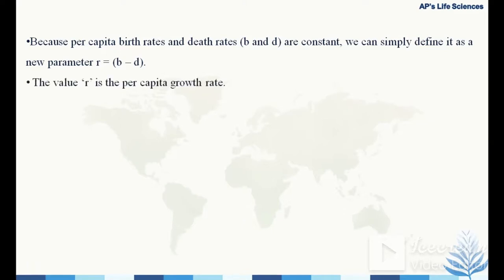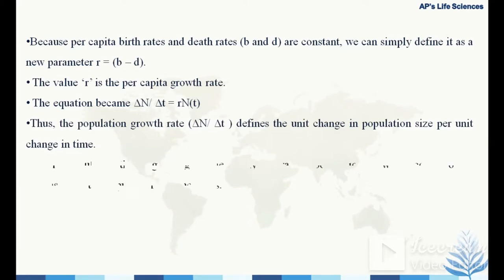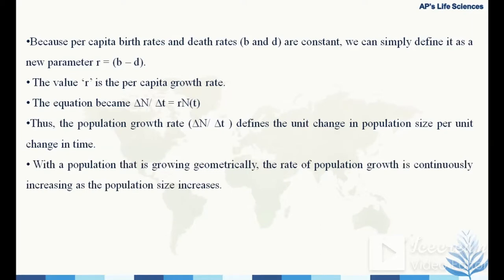We define a new parameter small r, equal to b minus d, as the per capita growth rate. The equation becomes ΔN/Δt = r·Nt. Thus the population growth rate ΔN/Δt defines the unit change in population size per unit change in time. With a geometrically growing population, the rate of population growth continuously increases as population size increases.